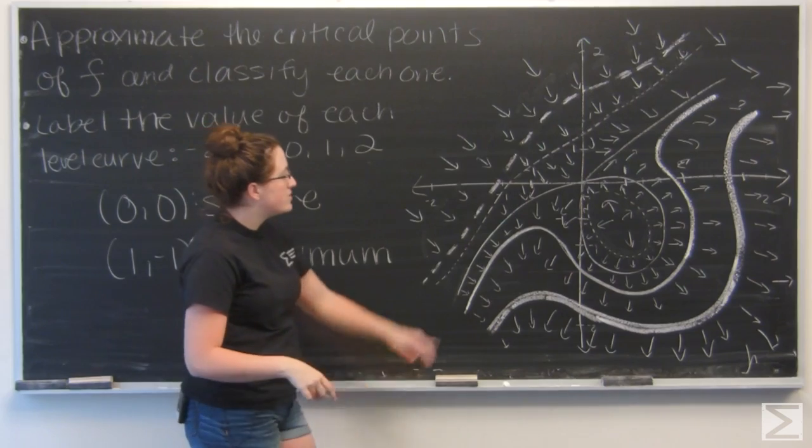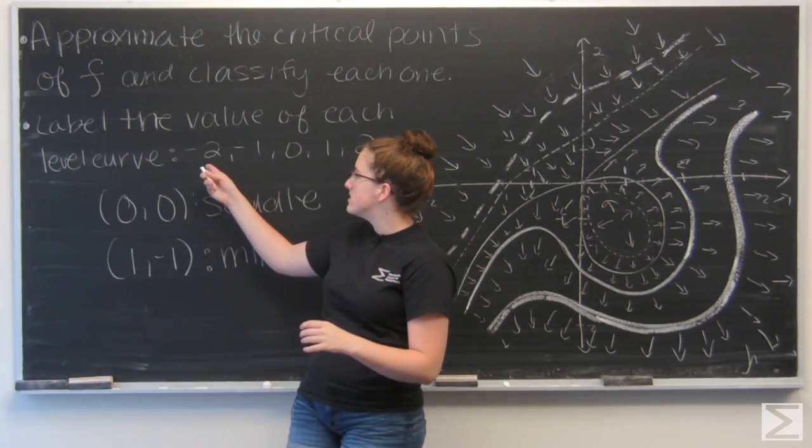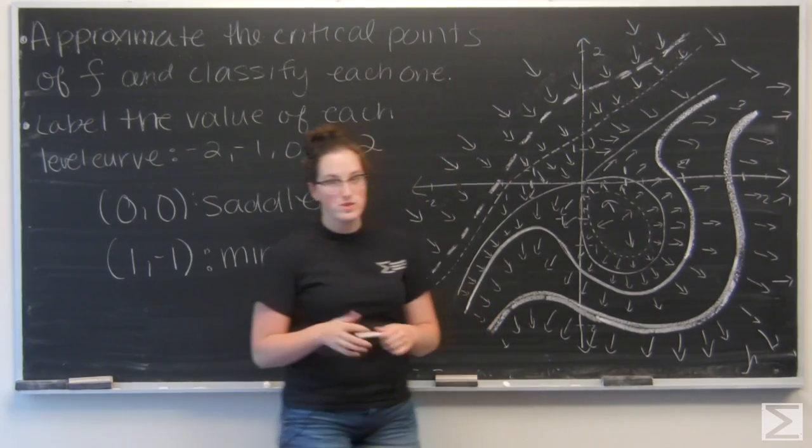And with this information, I want to give a value to each of the level curves. And I've been given -2, -1, 0, 1, and 2 to use.